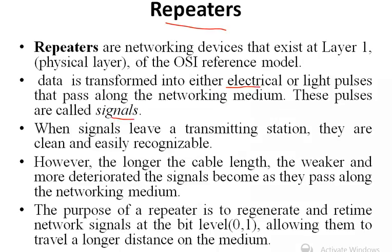Electrical signals travel in copper wire and light signals travel in fiber optic cables. When signals leave a transmitting station, they are clean and easily recognizable. However, the longer the cable link, the weaker and more deteriorated the signals become as they pass along the network medium.